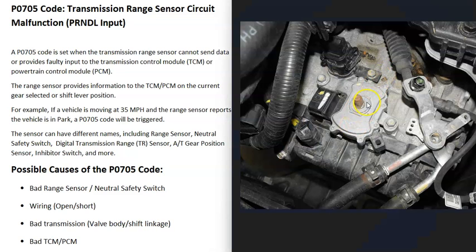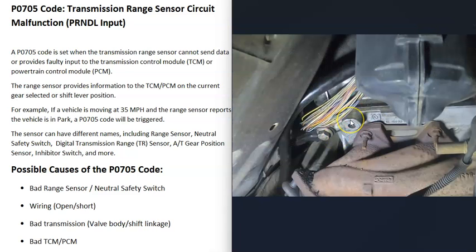The first thing that could cause this is that the sensor has just gone bad and needs to be replaced. Depending on the manufacturer, it could be called different things: a range sensor, a neutral safety switch, a digital transmission range sensor, a gear position sensor, or an inhibitor switch. But the first possible cause is simply a bad switch.